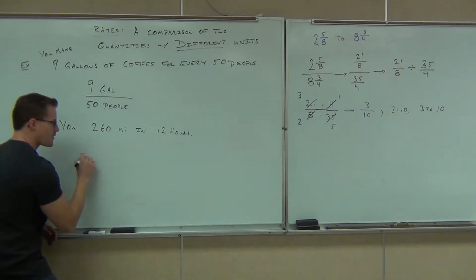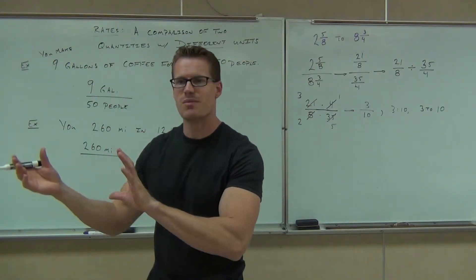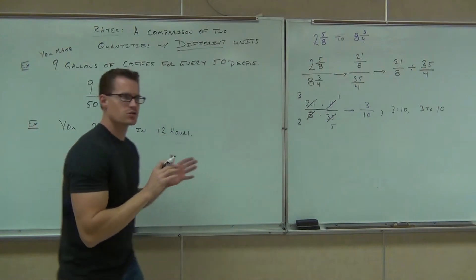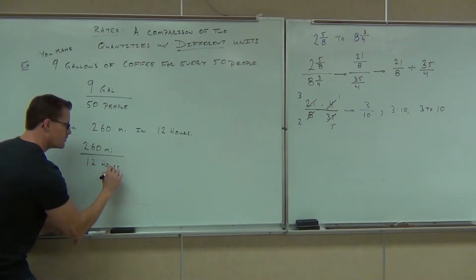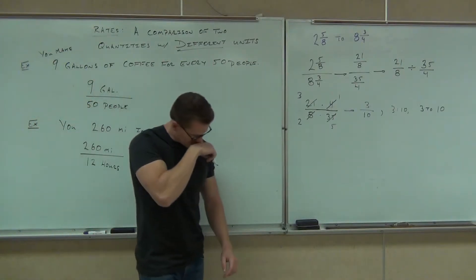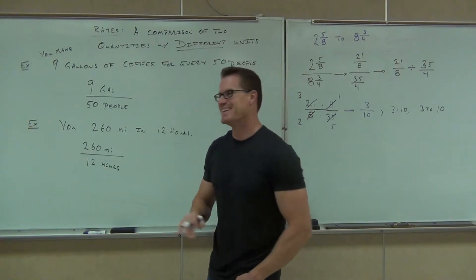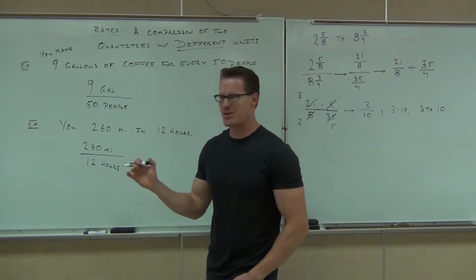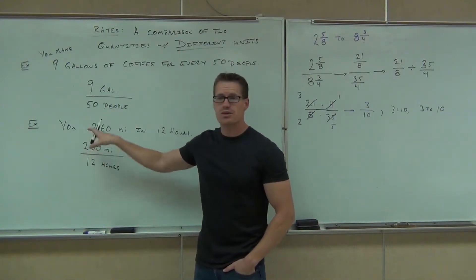What's going to go on the top of our fraction? 260 miles. Good. The first thing listed is the first thing that goes on the top of your fraction. You're saying 260 miles. You're comparing it to the 12 hours that you're driving it in or running it in or whatever. And it takes you 12 hours because you are a slow but careful driver. Very careful. You went 260 miles in the 12 hours. Are you okay with this rate?